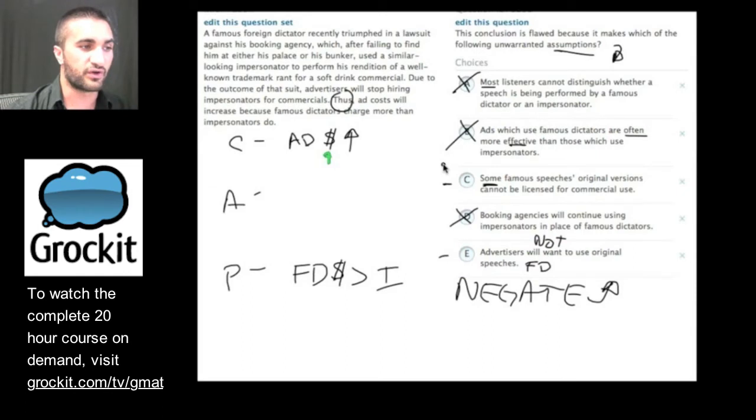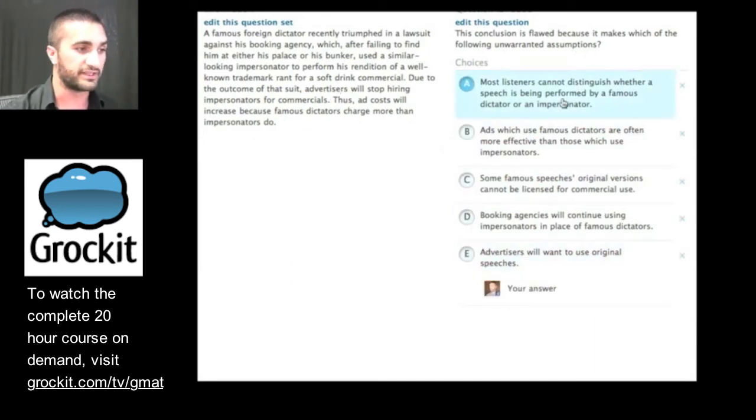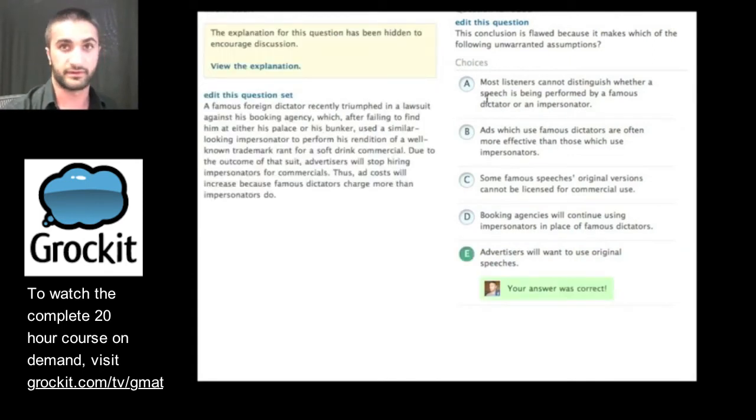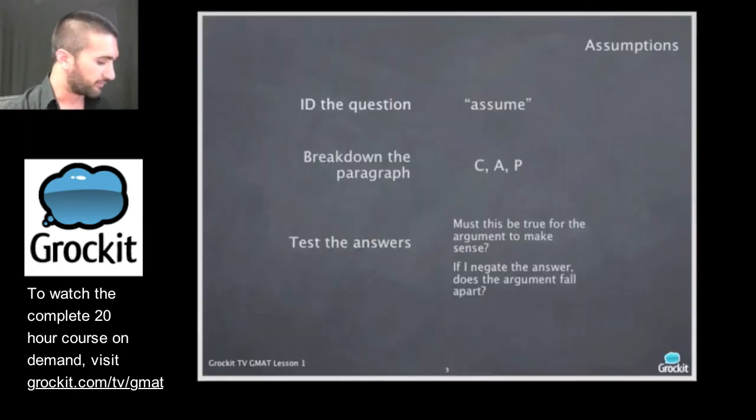Let's try C. Some famous speeches, original versions, can be licensed for commercial use. Okay. So if they can be licensed for commercial use, I don't know what that means about whether or not the prices will go up. So we are talking about situations where we're getting the original famous dictator to perform their rendition of a well-known trademark rant. So I think we can get rid of C. We verified that E does cause the argument to fall apart when we negate it. Let's pick it and see what we get. Nice. Great. So if you're practicing in Grockit, you can always take a moment here to view the explanation. Most of them are pretty detailed. We have an explanation of the question here and the explanation of the answer choices here. Great.